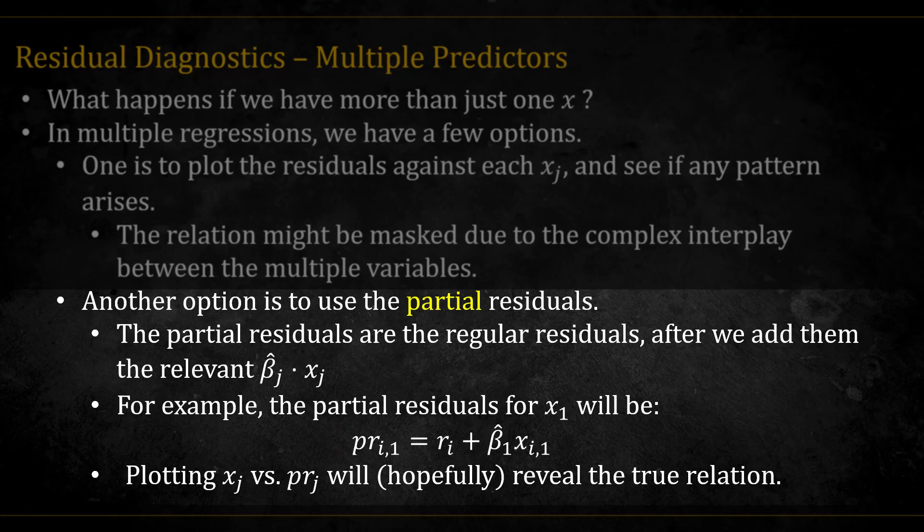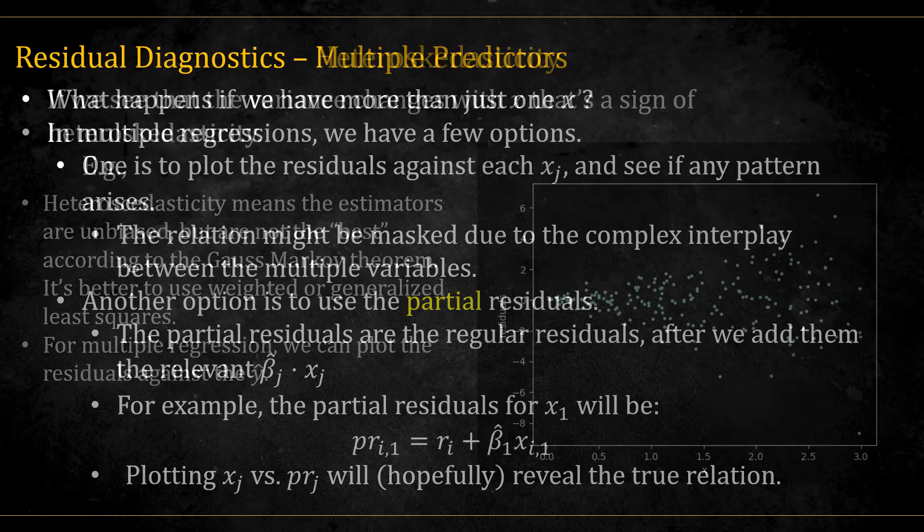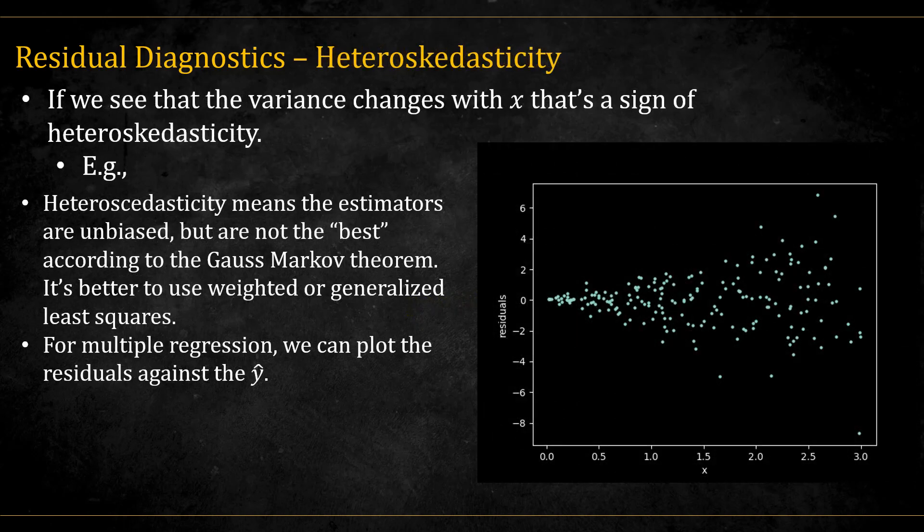We can also detect problems in the random component of our model. Here we see that the variance increases as x increases, which is an indication of heteroscedasticity, which violates the constant variance assumption. This means that the estimator isn't optimal. It's not the best according to the Gauss-Markov theorem.